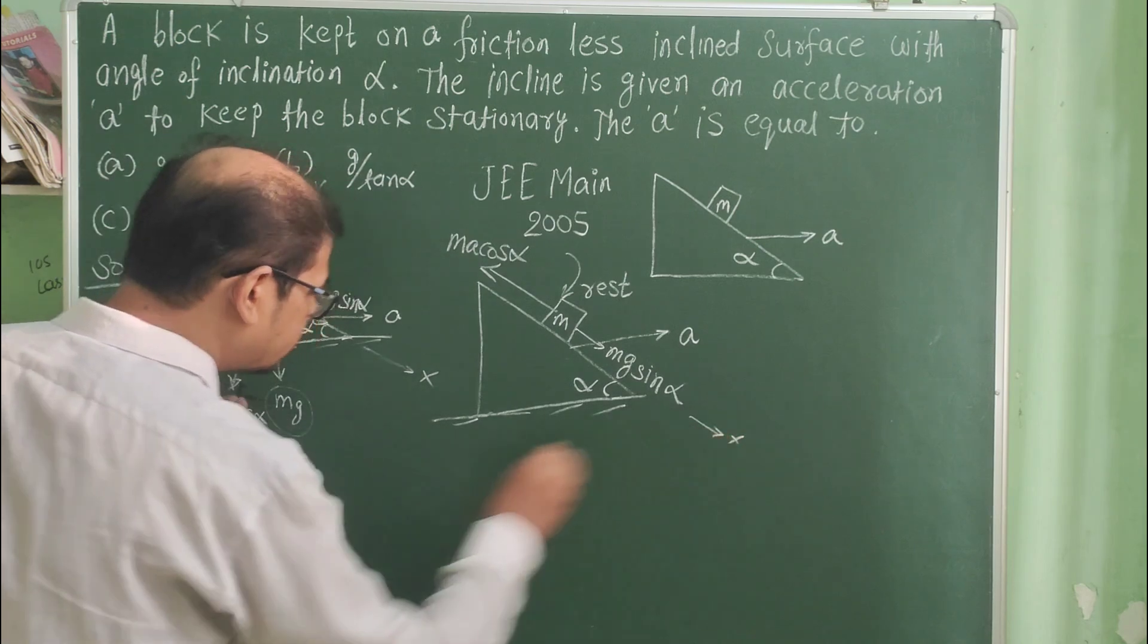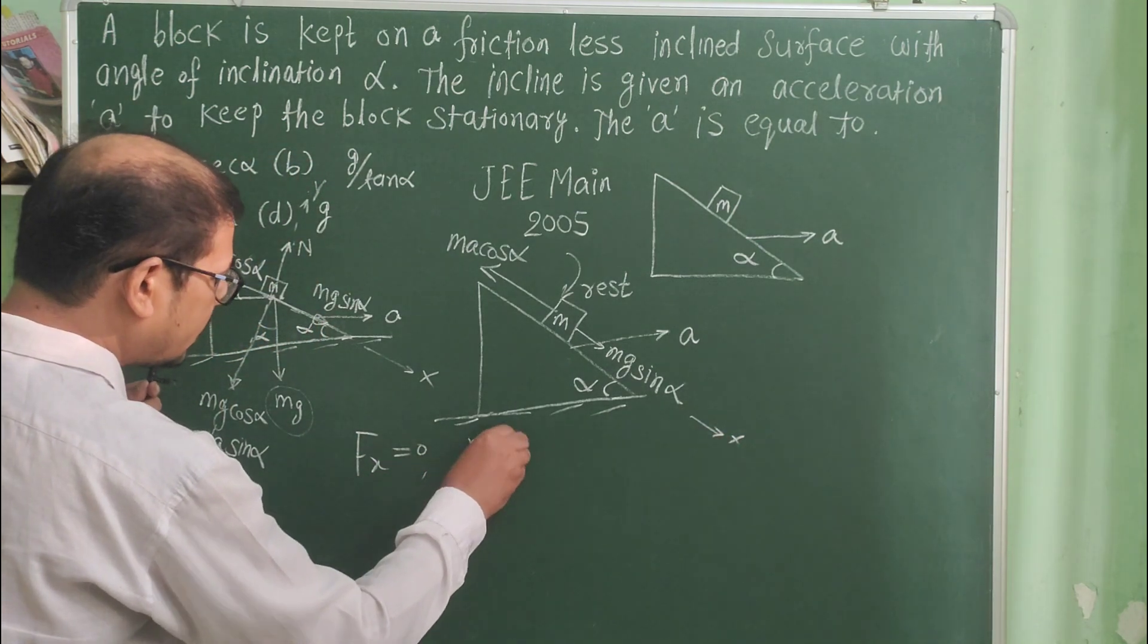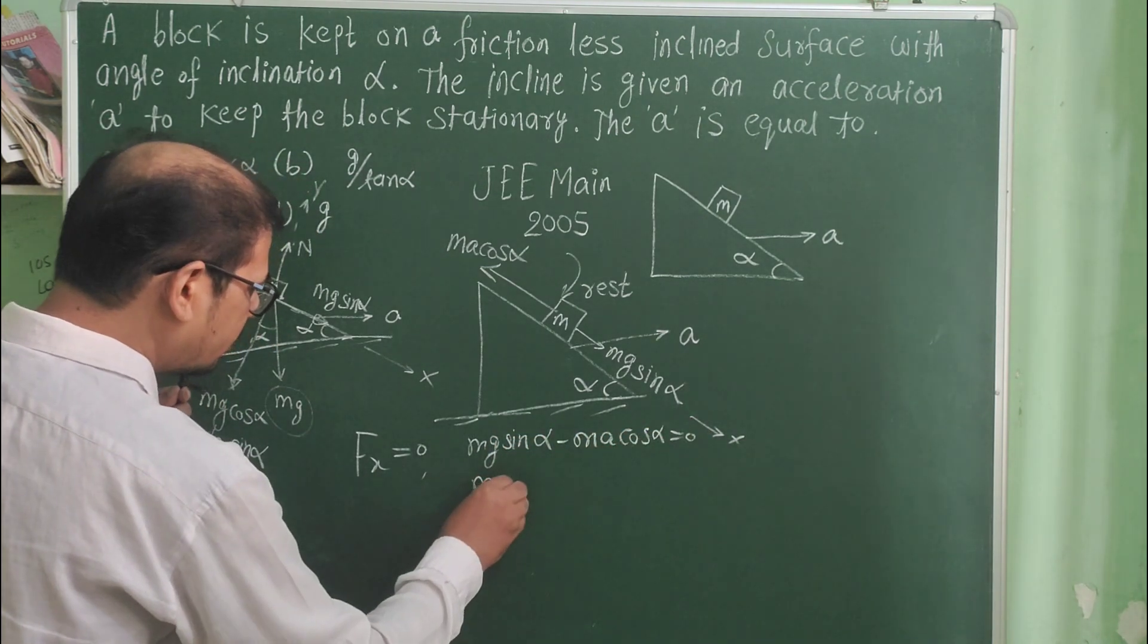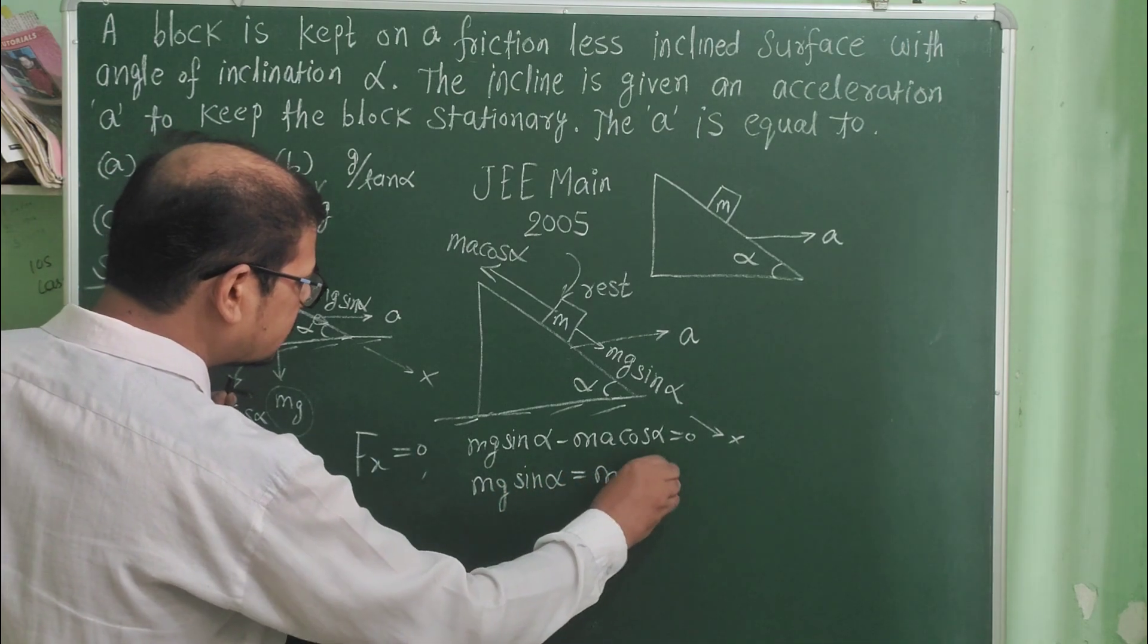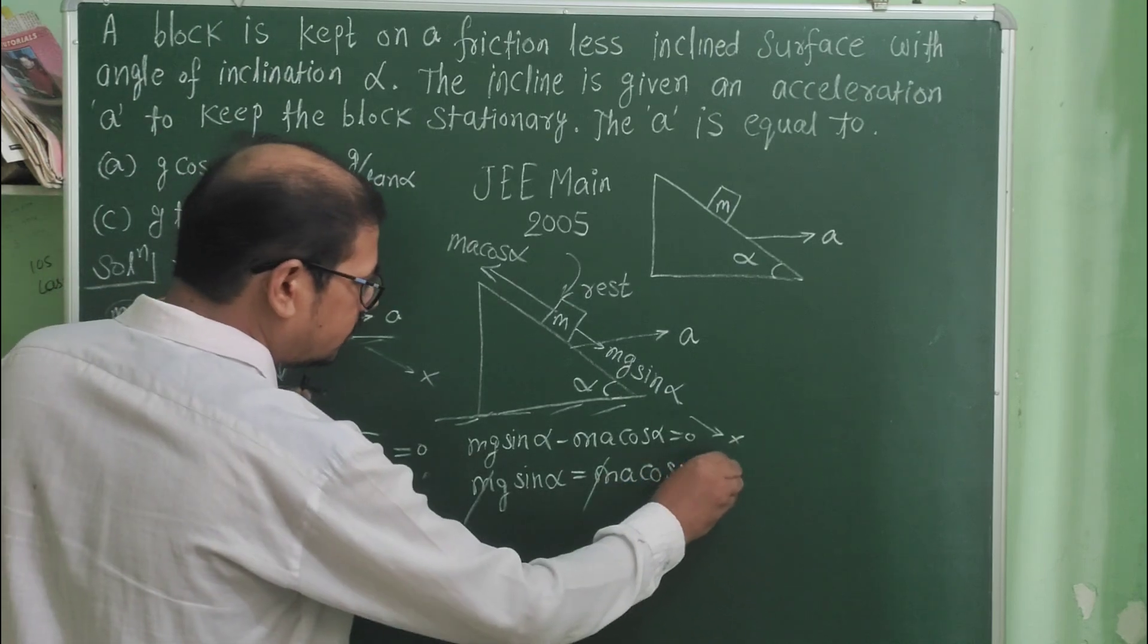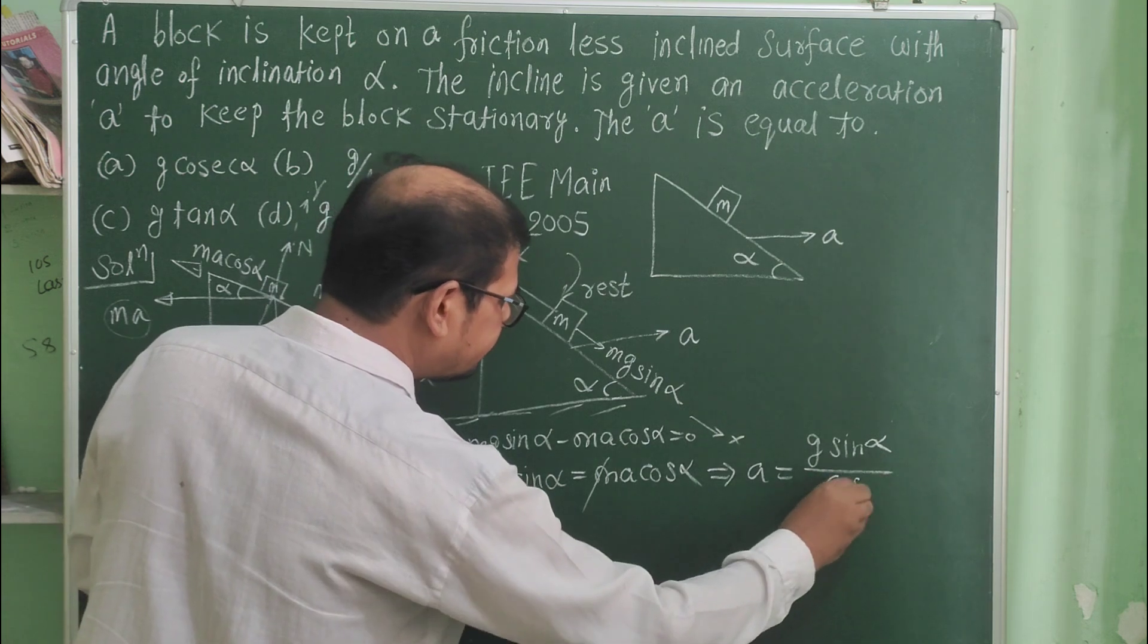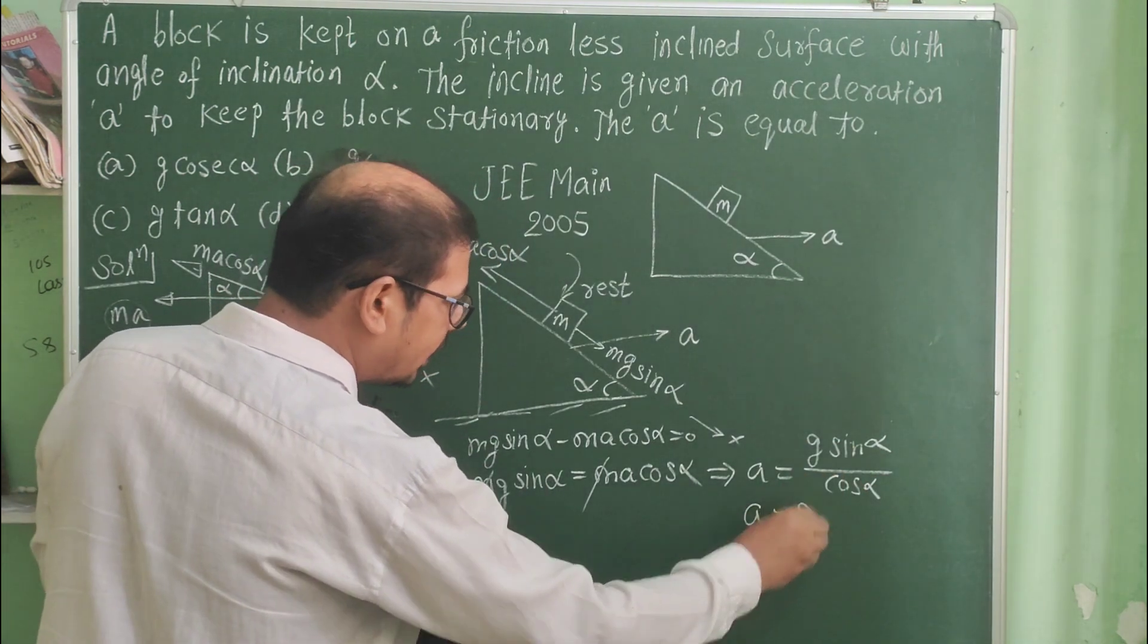So we can write, this is the x-axis, so Fx equals 0. mg sin alpha minus ma cos alpha equals 0. So mg sin alpha equals ma cos alpha. We have to calculate a. So a equals g sin alpha divided by cos alpha. Sin alpha divided by cos alpha equals tan alpha.